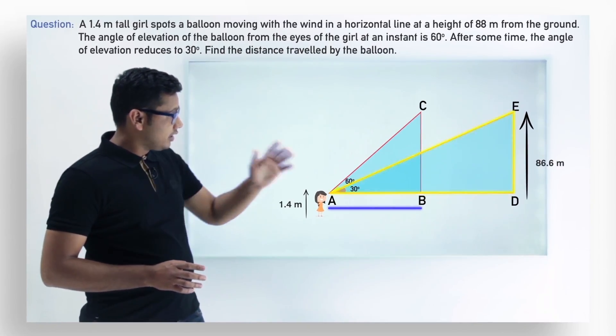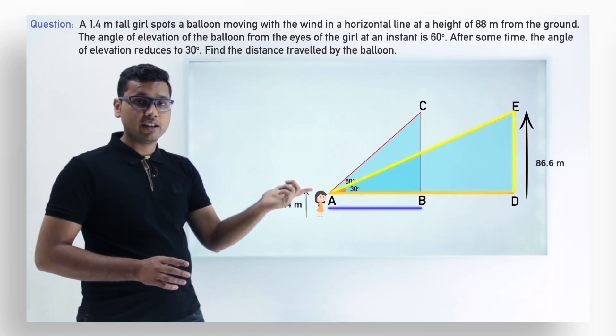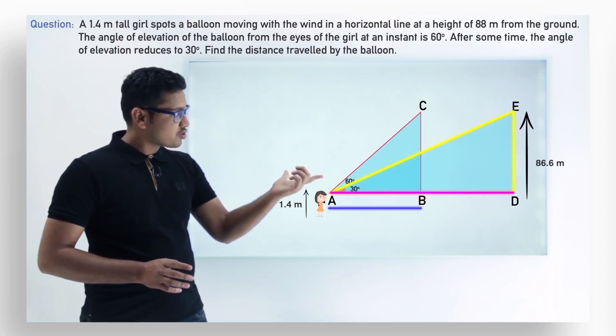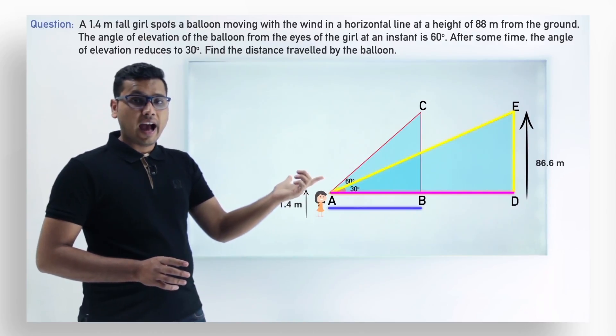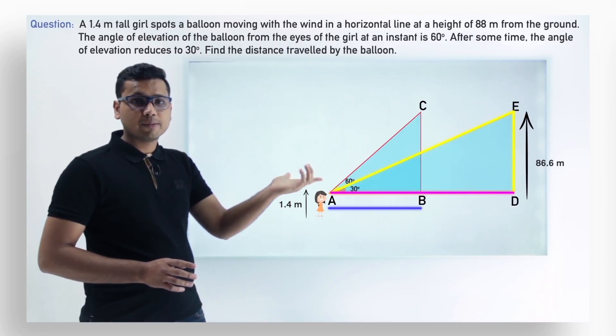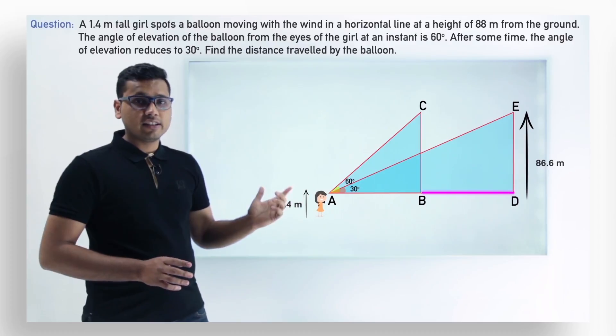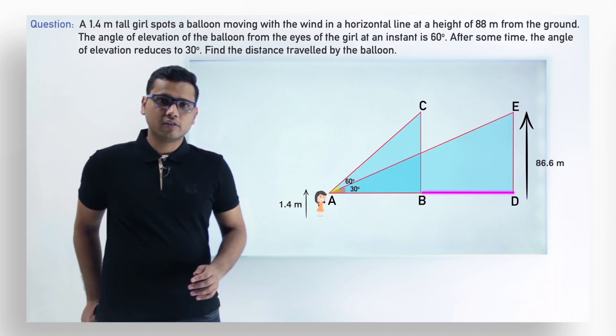Similarly, if we look at the triangle ADE, we can find the base which is AD. So from the bigger triangle we can find the distance AD, and from the smaller triangle we can find the distance AB. By subtracting AB from AD we can get the distance. So we can solve this.